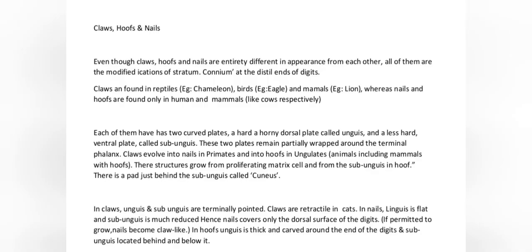In nails, unguis is flat and subunguis is much reduced, hence nails cover only the dorsal surface of the digits. If permitted to grow, nails become claw-like. In hooves, unguis is thick and curved around the end of the digits and subunguis is located behind and below it.